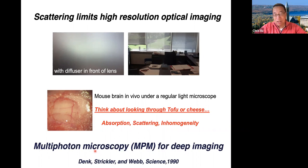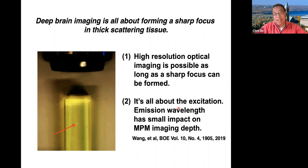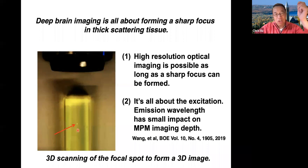The technology we use, called multi-photon microscopy, is still the best technique available today for deep tissue imaging in an intact brain. It turns out that if you want to go deep into thick scattering tissue, it's all about forming a sharp focus in 3D. As long as you can form a sharp focus, you can XYZ scan to form a three-dimensional image. It's all about excitation confinement — the emission wavelength has very small impact on how deep you can go. The emphasis is: as long as you can form a sharp focus, you can do three-dimensional scanning to form a 3D image in thick scattering tissue.